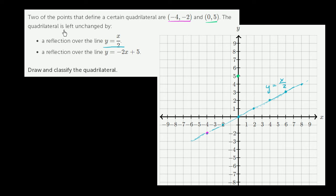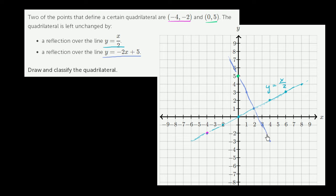They also say that the quadrilateral is left unchanged by reflection over the line y is equal to negative 2x plus 5. The y-intercept here is 5 — when x is 0, y is 5 — so it goes through that point. The slope is negative 2: every time we increase x by 1, we decrease y by 2. It actually goes through that point and just keeps going. So that is y is equal to negative 2x plus 5.